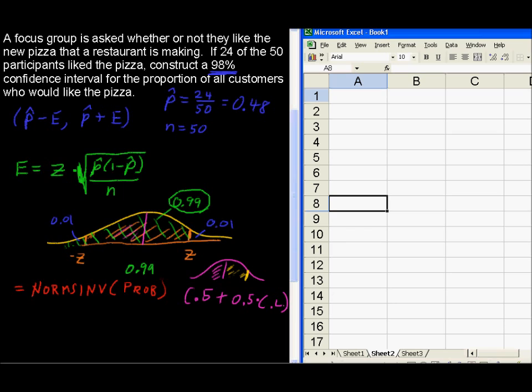So equals normsinv. The probability that we're looking for, we said 0.99. That's the area to the left of the z-score that we're looking for. Now I'm going to continue with this. I close the parentheses. Now that is the z-score. If I just do that, I'm just going to get the z-score.